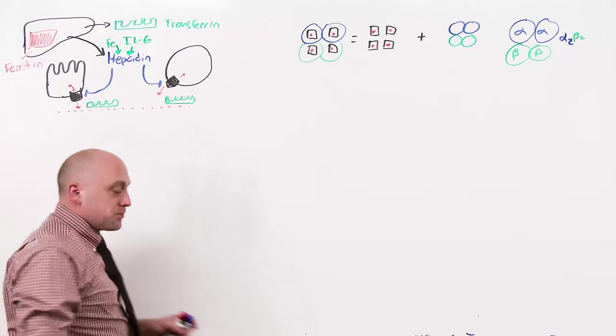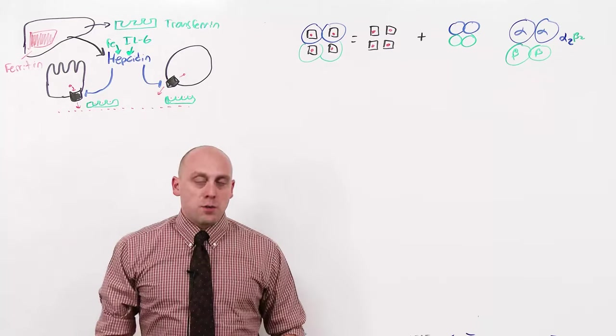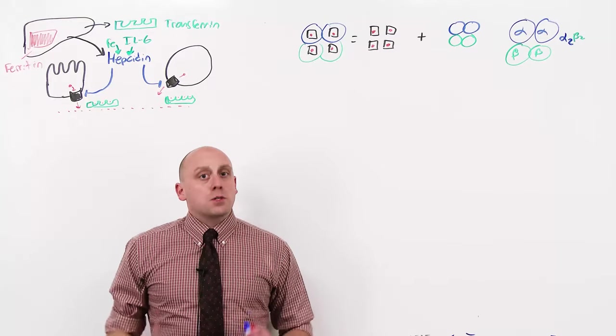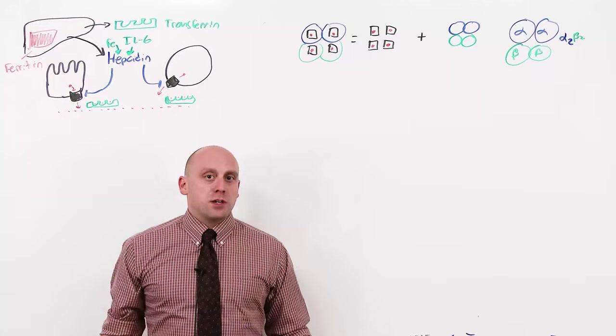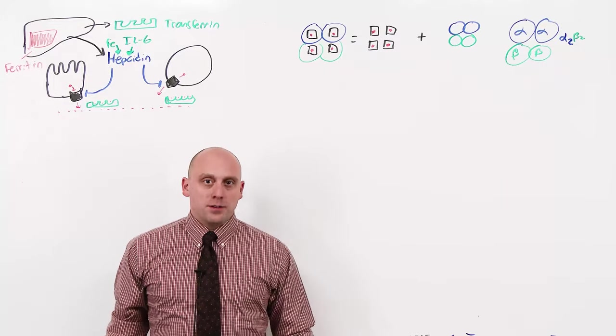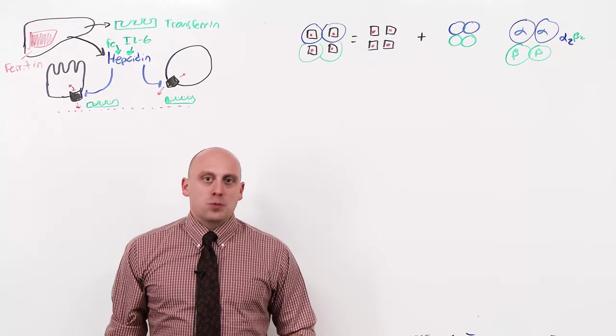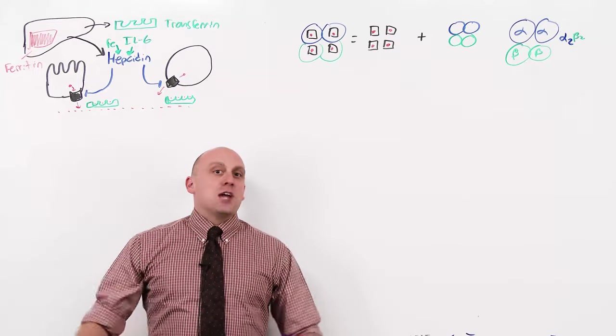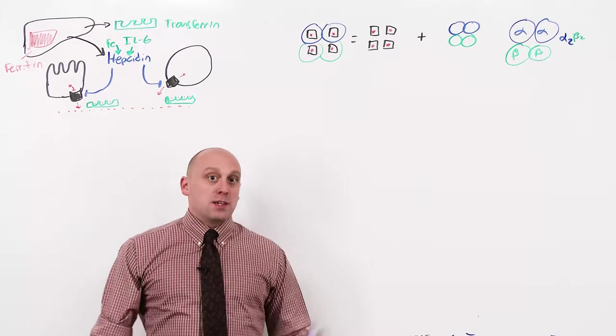The idea being, in an acute infection, bacterial cells need iron. Our cells need iron. But our cells have a host organism, which can protect our cells for a few days without iron. Bacteria cannot. The problem comes, though, when interleukin-6 is expressed chronically, and there is no acute infection that will end, as we'll see.